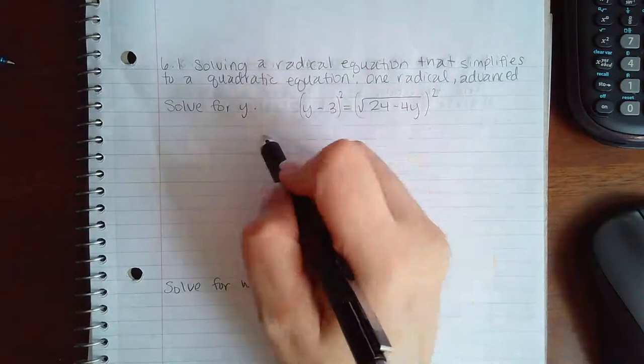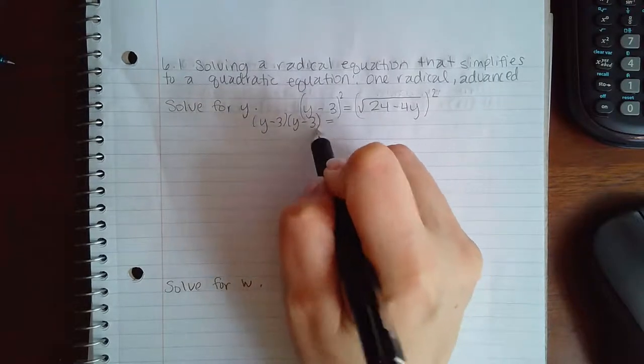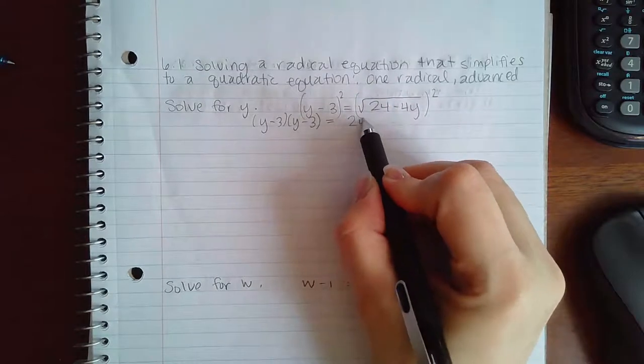So on this side I'm going to end up with y minus 3 times y minus 3. And on this side the radical and the square will undo each other.